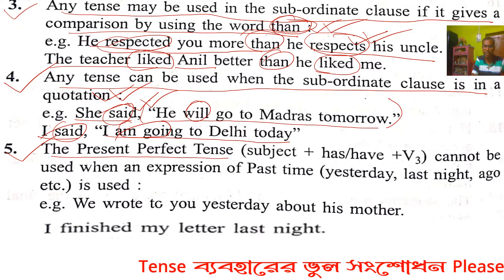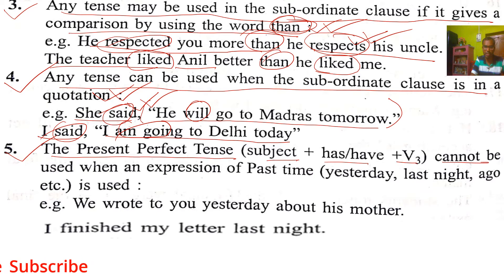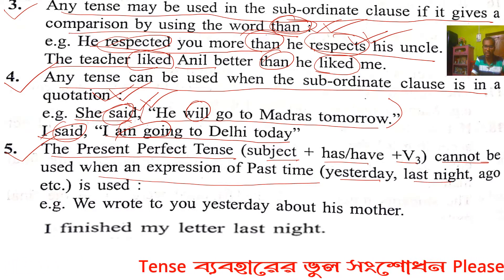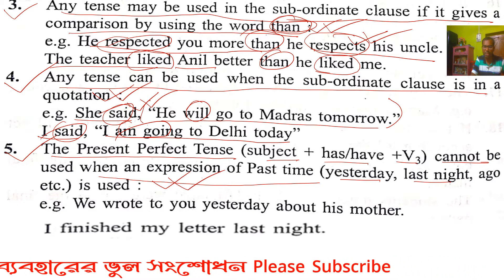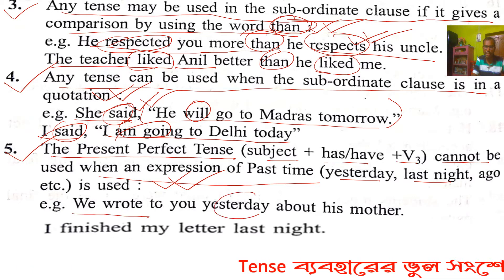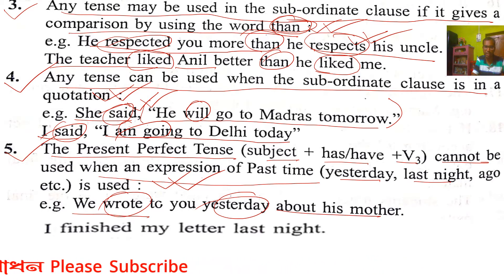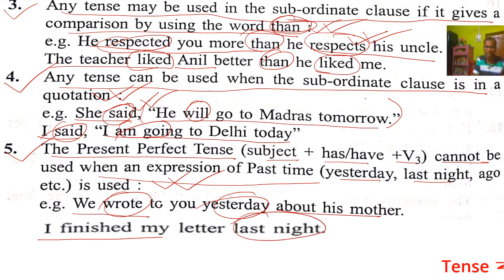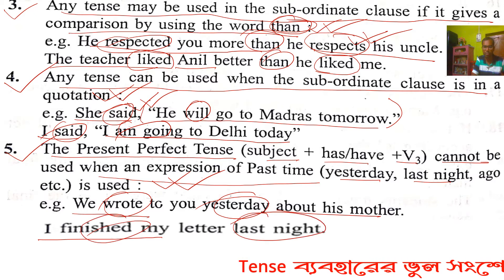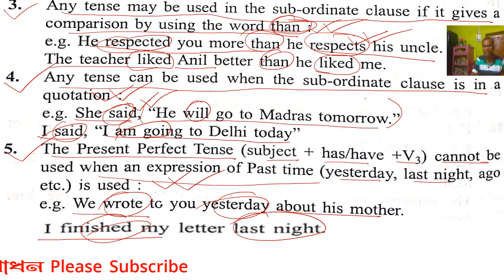Rule 5: The present perfect tense — subject + have/has + verb third form — cannot be used with expressions of past time such as 'yesterday', 'last night', or 'ago'. In such cases, past indefinite tense should be used. Example: 'She wrote to me yesterday' — 'wrote' is past indefinite, not 'has written'. 'I finished my letter last night' — 'finished' is correct, not 'have finished' or 'had finished'.